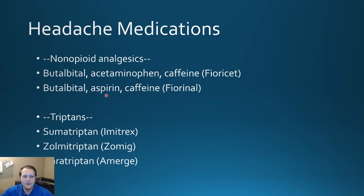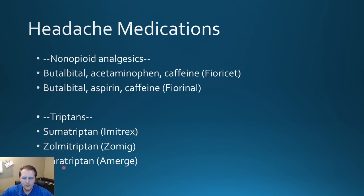Other things we can use for headaches include Fioricet and Fiorinal. These usually contain either aspirin or acetaminophen, caffeine, and a barbiturate derivative drug called butalbital — varying effects you're going to see with that. The nice thing patients can use for abortive treatment includes the triptans — those serotonin-like drugs — which include things like sumatriptan, zolmitriptan, and naratriptan. Because patients presenting with migraines are frequently very nauseous and vomiting, a lot of these have injectable formulations or nasal spray formulations — for instance, Imitrex as a nasal spray that you can spray right into the nose, which works very effectively for aborting those migraines.